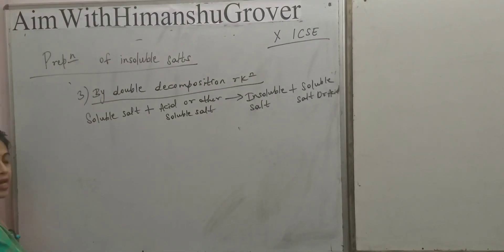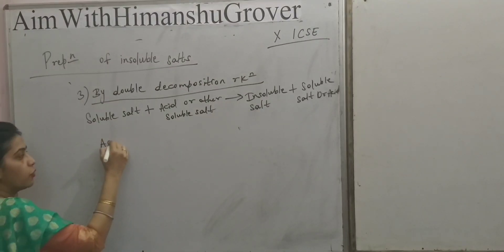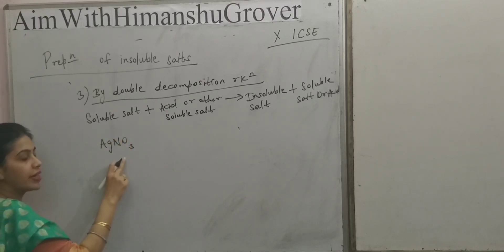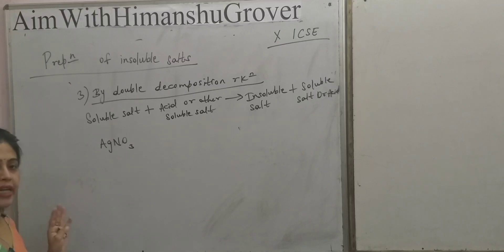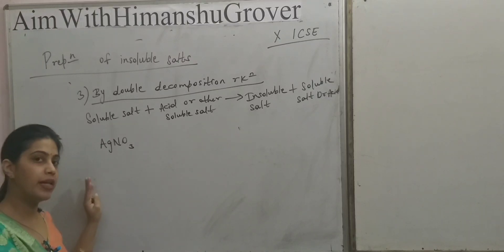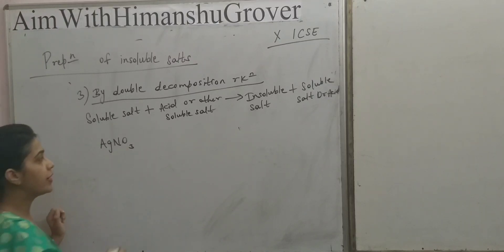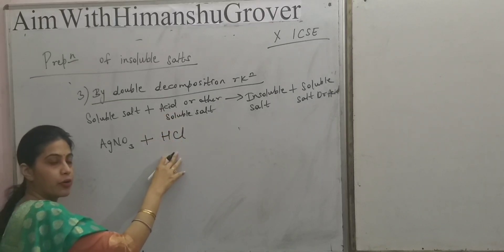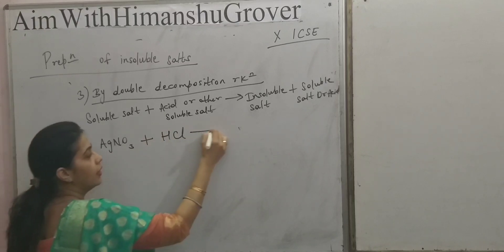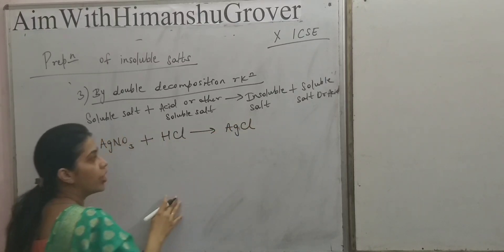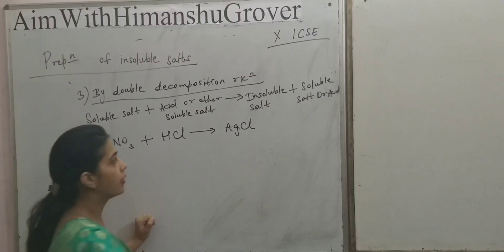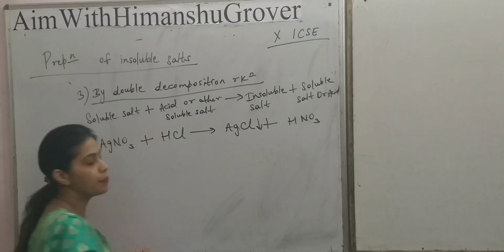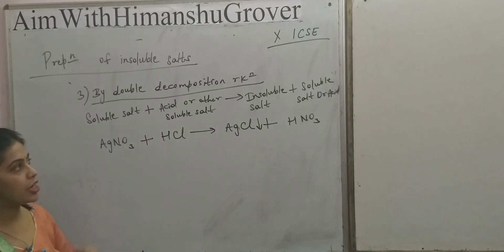For example, when AgNO3, silver nitrate, is a soluble salt — because all metallic nitrates are soluble in nature — when it is treated with an acid, suppose HCl, hydrochloric acid, then one product is AgCl and the second one is HNO3.